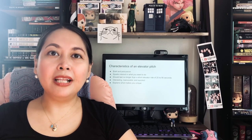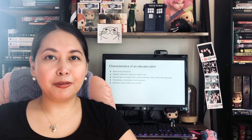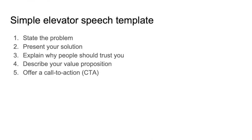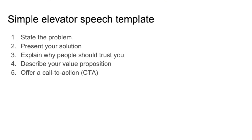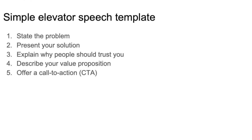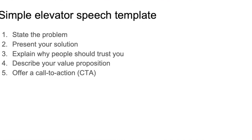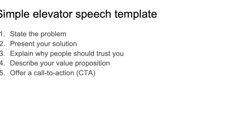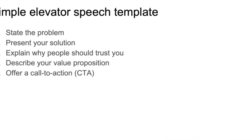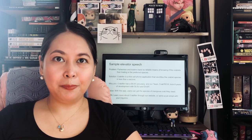In order to draft your elevator pitch, you have to consider five pieces of information. First, the statement of your problem. Second, the presentation of your solution. Third, an explanation as to why people should trust you. Fourth, a description of your value proposition. And fifth, an offer for a call to action.